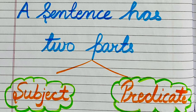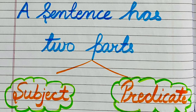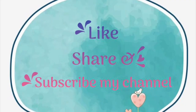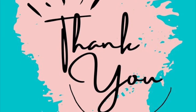So subject is the introductory part and predicate is the descriptive part. Once you find out the subject, the rest of the sentence is predicate. I hope you will find this video useful and informative and it will help you to understand what is a sentence, what is subject, and what is predicate. This is all from my side. Thank you.